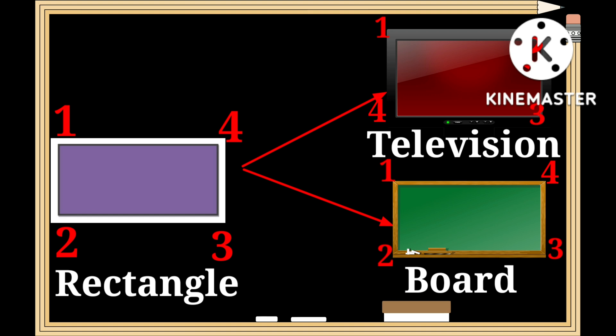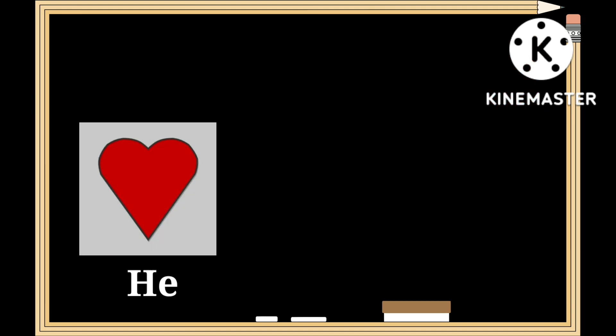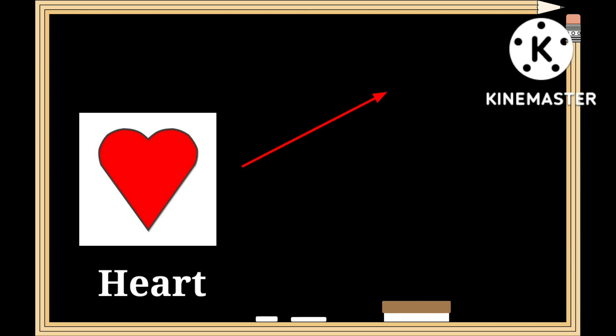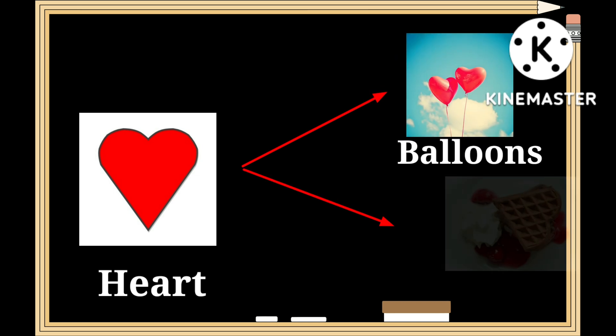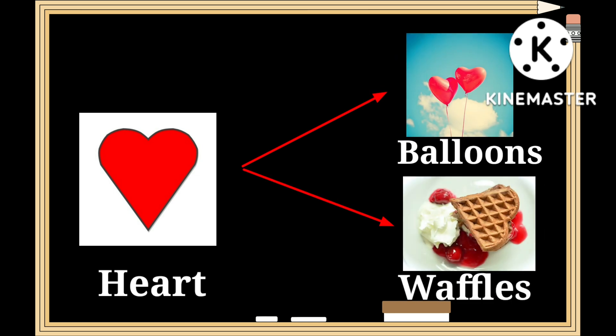Television and a boat both have the same shape of a rectangle. This is a shape of a heart — h-e-a-r-t. As you can see, the shape of a balloon as well as waffles both have got the shape of a heart.